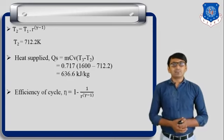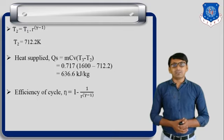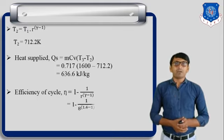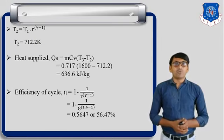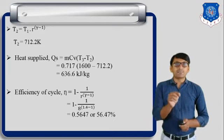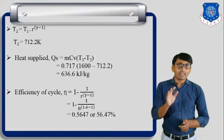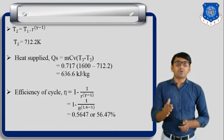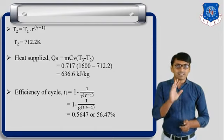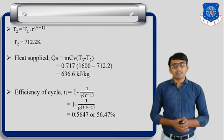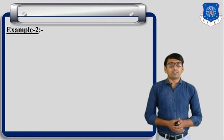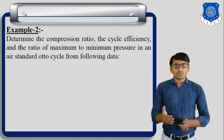Third step: efficiency of the cycle. Eta equals 1 minus 1 divided by R raised to gamma minus 1. Putting in the values of R and gamma, we get efficiency of the Otto cycle equal to 0.5647, or 56.47 percent. This completes example number one of the Otto cycle.